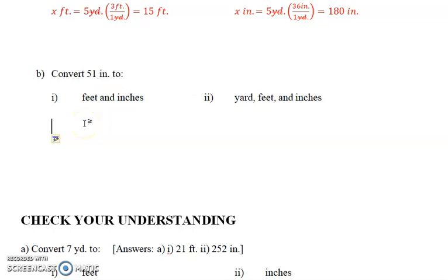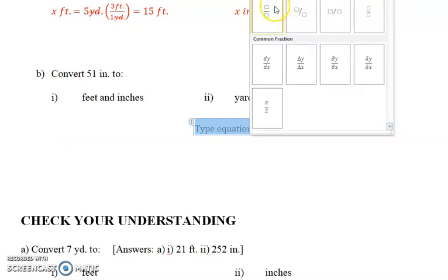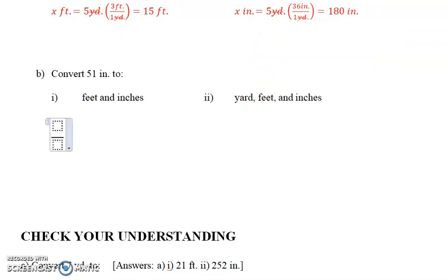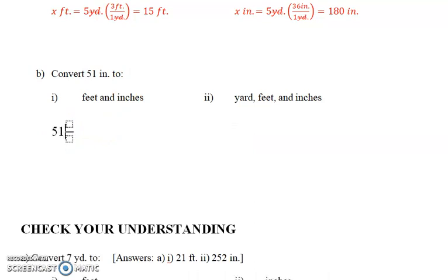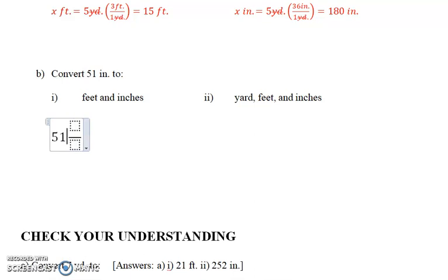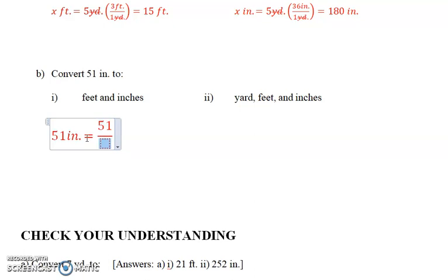So what we do is we're going to convert into an improper fraction. So what we have here is we've got our fraction. We'll take our other fraction here. And we have 51 inches, and that's going to equal 51.